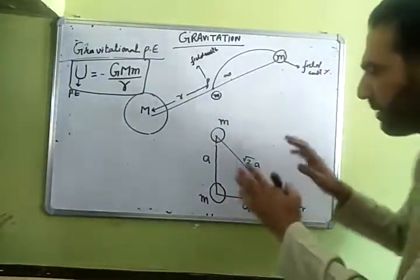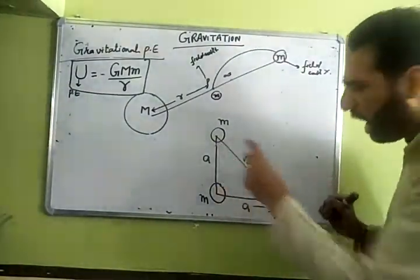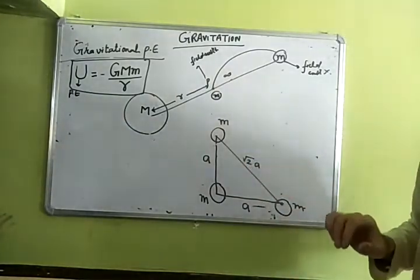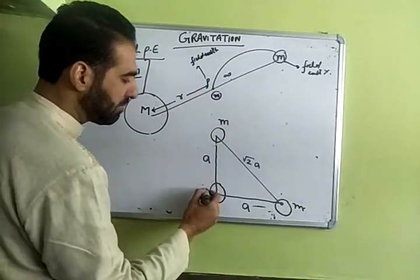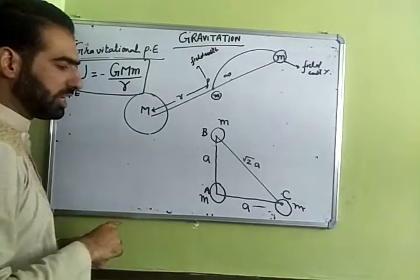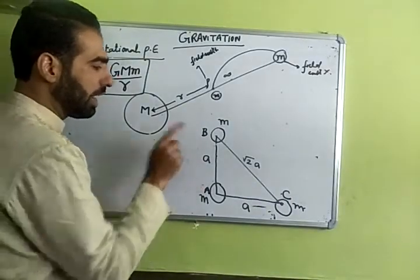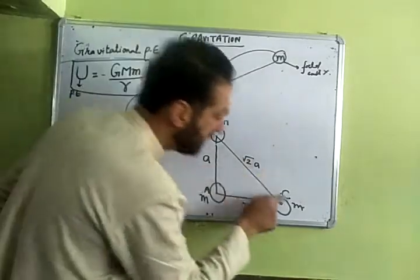As I just explained, like force is for a pair, similarly gravitational potential energy is also for pairs. So what will you do? From the basics of combinations and permutations, you will see what combinations are forming. Let me name them as A, B, C. What combinations are forming? One is the AB pair.